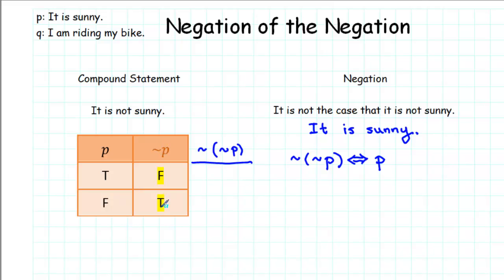And since we already have not P, we just need to find the negation of that. The negation of false is true. And the negation of true is false.